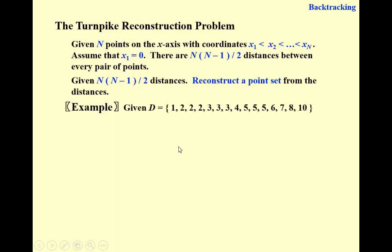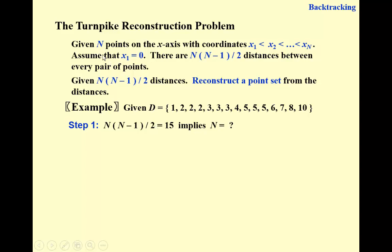For example, we have a distance set in sorted order. If we count the distances, there are 15 of them. The first question is: what is n, how many points do we have? We solve the equation for n — if we have n points there are n*(n-1)/2 distances, and that number is 15, so n equals 6. But we only need to recover four points.